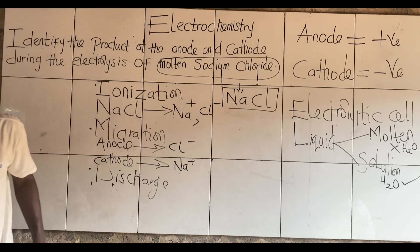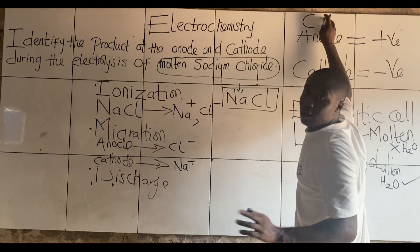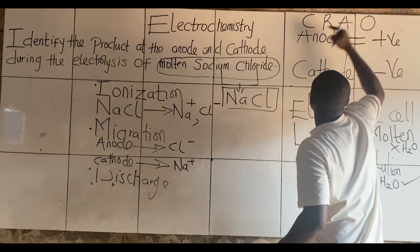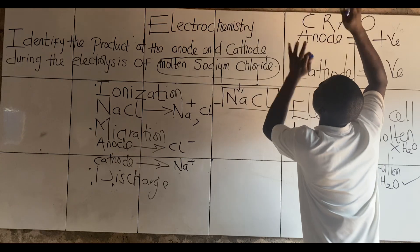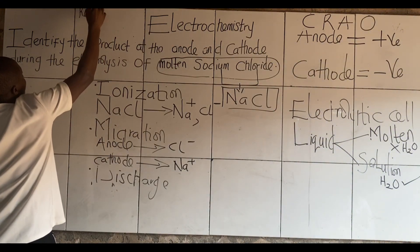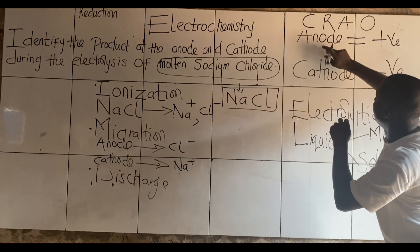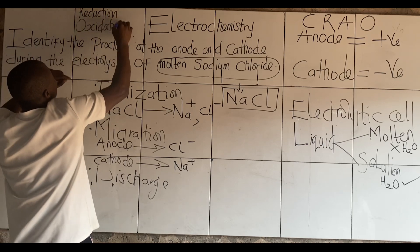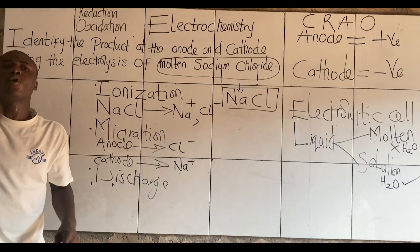In our first class on this topic, I gave an acronym for the discharge step, and that acronym is CROA. C here means cathode. R here means reduction. A here means anode. And O is oxidation. Reduction and oxidation are two key reactions in electrolysis when we study them. So we have to know what reduction and oxidation mean.